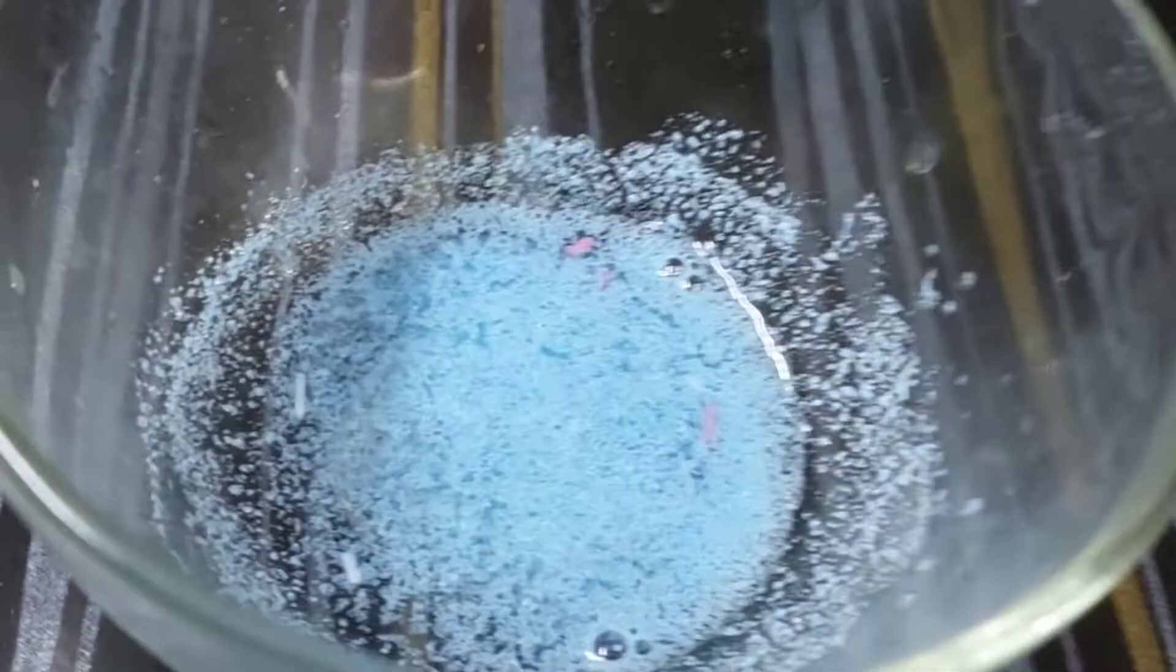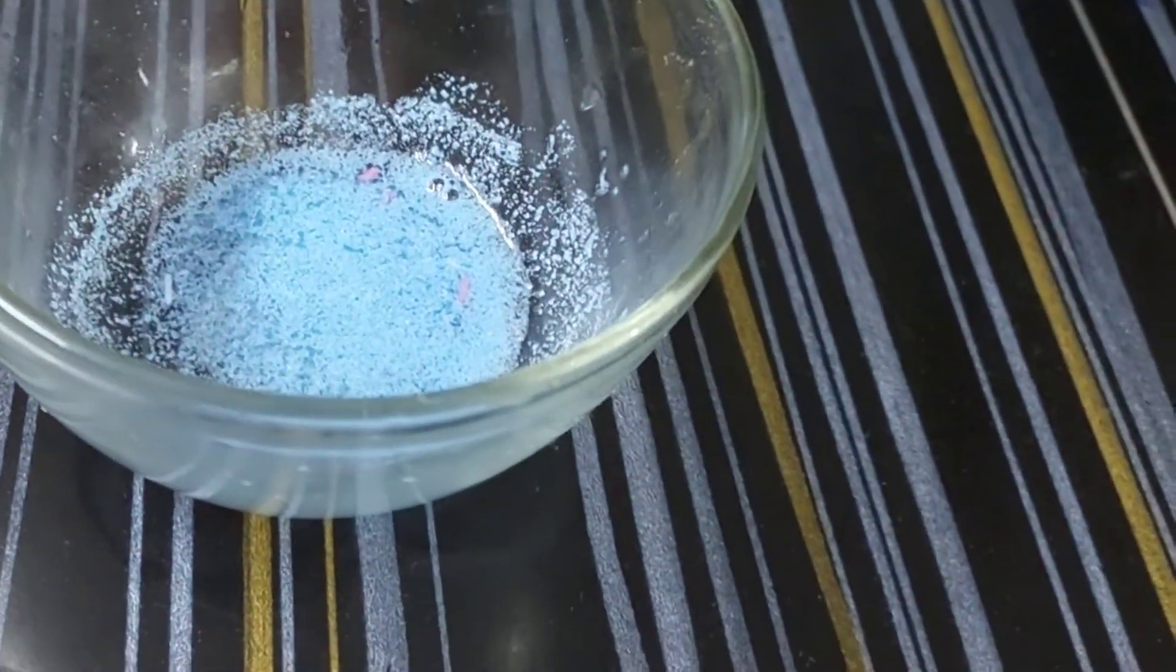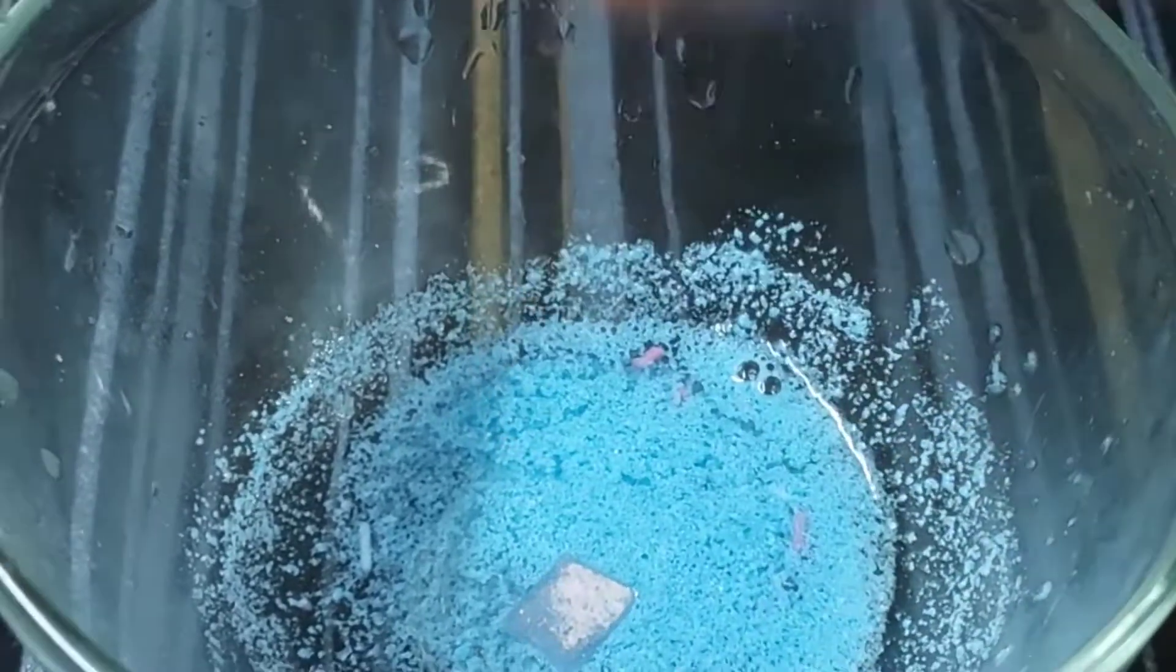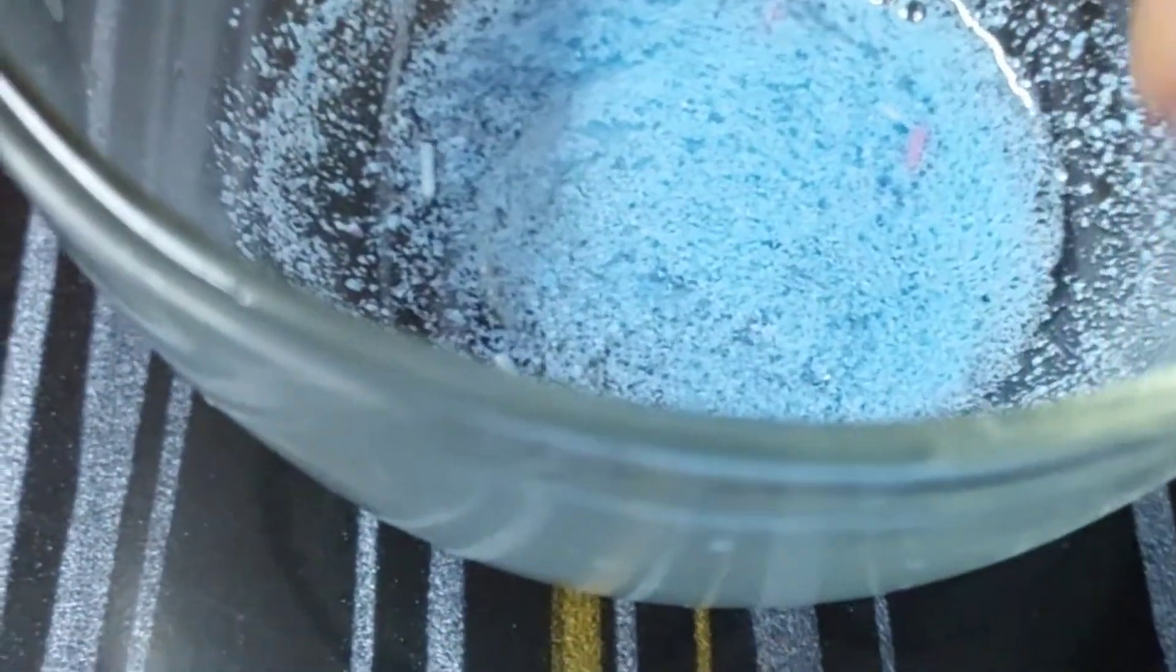Now we have washing powder solution. We'll put red litmus paper into this. Here you can see it is converted into blue litmus paper, which means it is basic in nature.